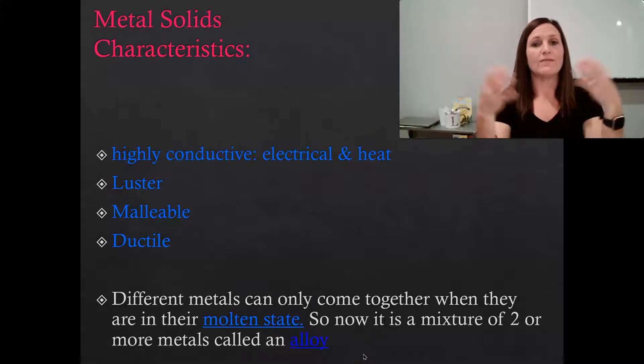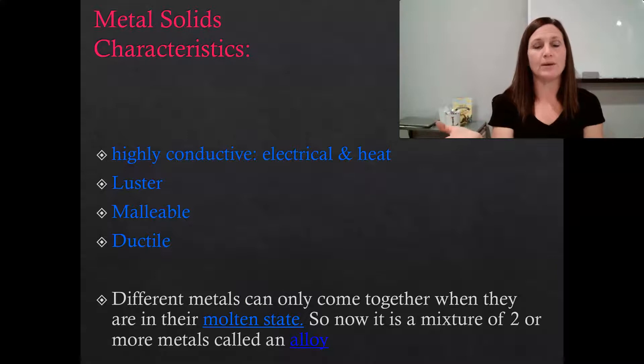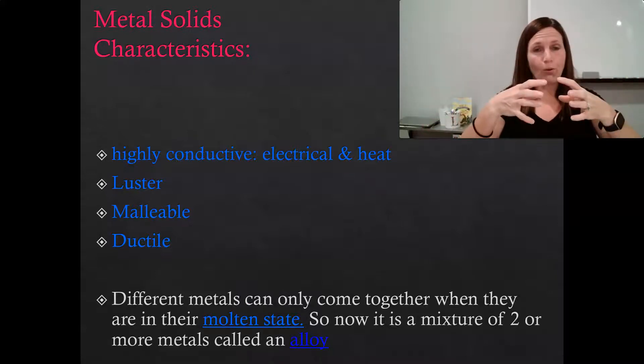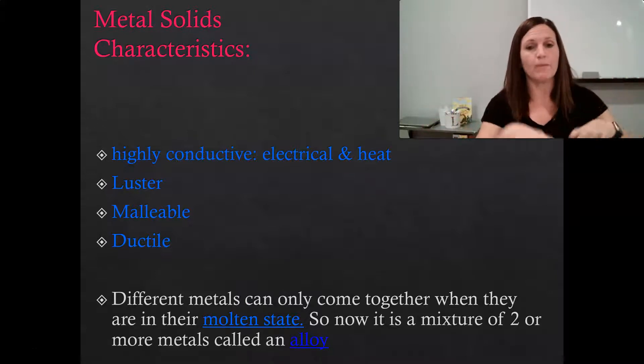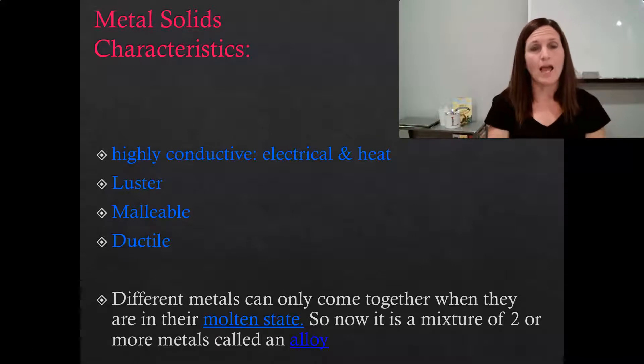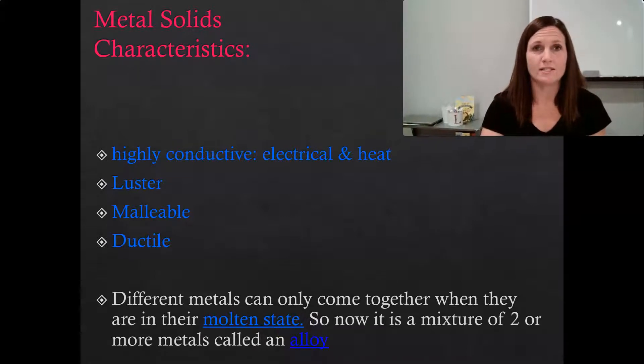And in order to make an alloy, you have to heat both of the metals up into their liquid state, pour them together, stir them up, and then let them cool. And then you can make a metal alloy. There are two types of metal alloys, and they play really important roles in our society.